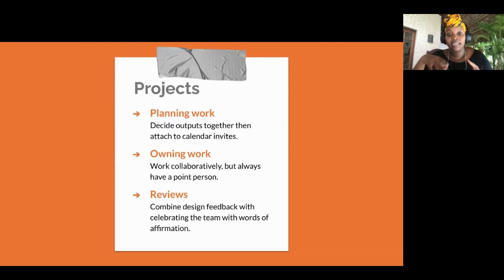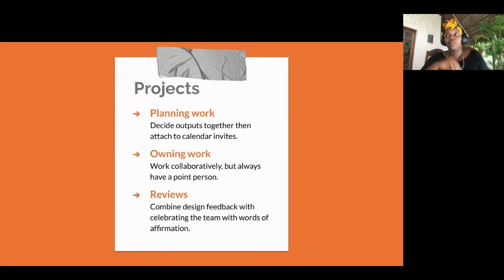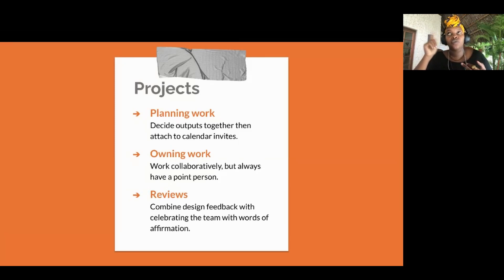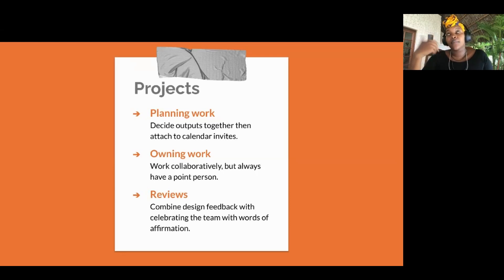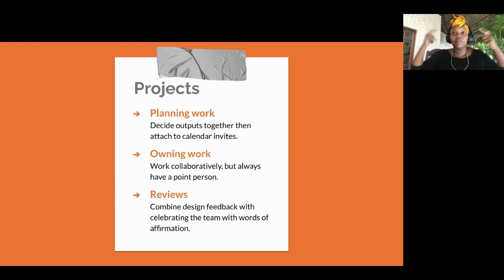For projects, decide outputs together and attach them to calendar invites. When starting a new project, agree on the expected output — for example: brand work produces a brand guide; UX produces user stories and a user flow; UI produces a high-fidelity prototype. Attach these to calendar invites so at the back of everyone's mind they know 'a prototype is expected by the 15th of this month.' This is decided collaboratively, not top-down.